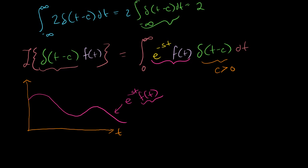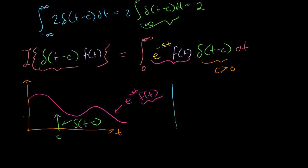Now let's graph our Dirac delta function — with 0 everywhere except right at c, where it pops up infinitely high. But we only draw an arrow of height 1 to show that its area is 1. Normally when you graph things you don't draw arrows, but this arrow shows that the area under this infinitely high thing is 1. So we put a 1 there. Let me redraw my axes — don't judge me by the straightness of my axes.